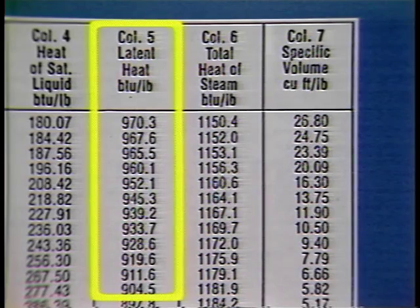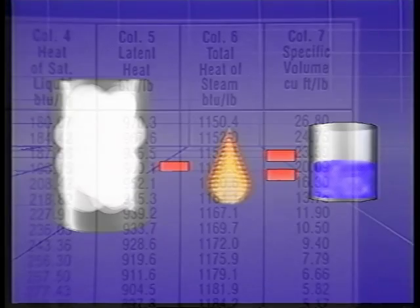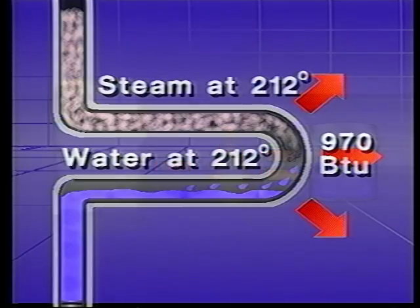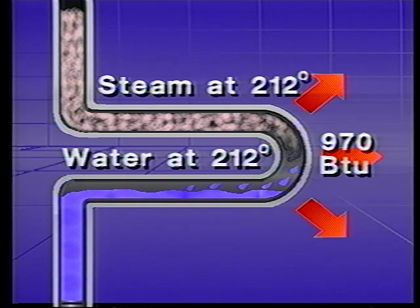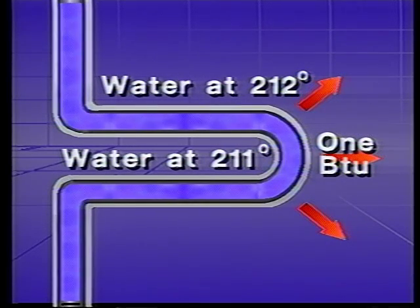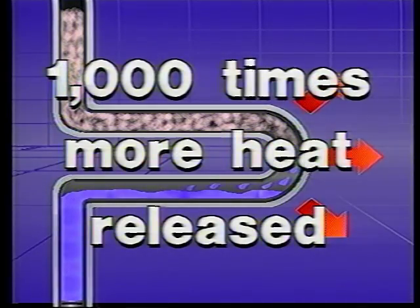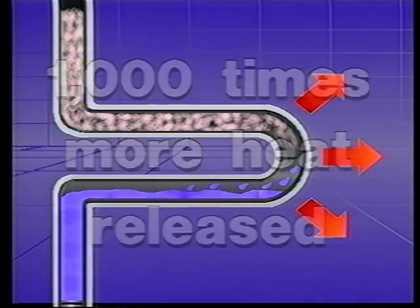The latent heat column best indicates why steam is such a good heating agent. All of the latent heat is released immediately when the steam condenses. At standard pressure, collapsing steam releases 970 BTUs per pound. In contrast, one pound of water at 212 degrees releases only one BTU as it cools to 211 degrees. The condensing steam gives up almost 1,000 times as much heat as the water without any change in temperature.